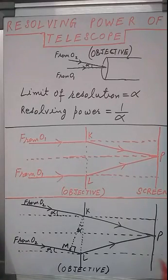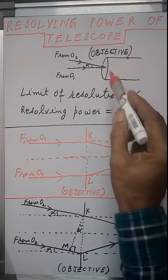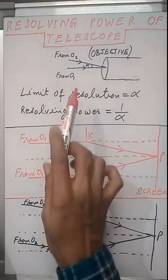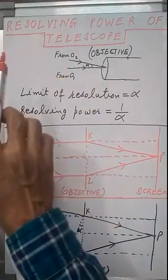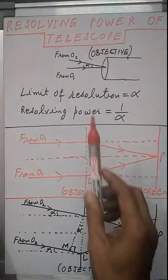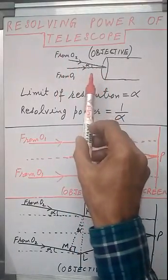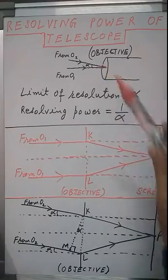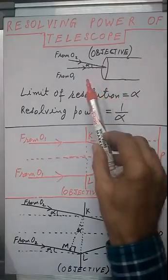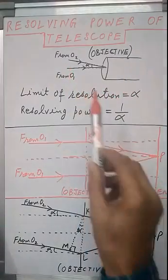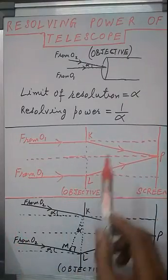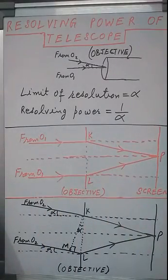Let us try to understand this definition. Suppose we have this telescope with its objective lens, and two objects O1 and O2 are lying at infinity. Parallel rays of light will come from O1 and parallel rays will come from O2. Suppose the rays of light coming from O1 and O2 make an angle alpha between them. As you decrease the value of alpha, at a particular minimum value of alpha the images of O1 and O2 will appear just resolved. That minimum value of alpha is called the limit of resolution of the telescope, and the reciprocal of this angle is called the resolving power of the telescope.